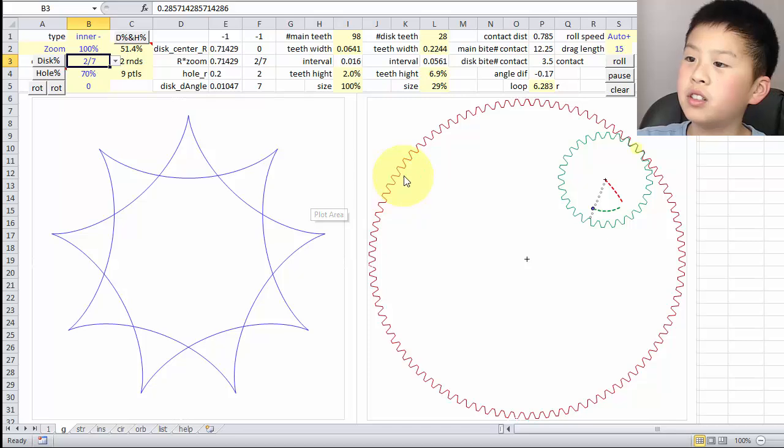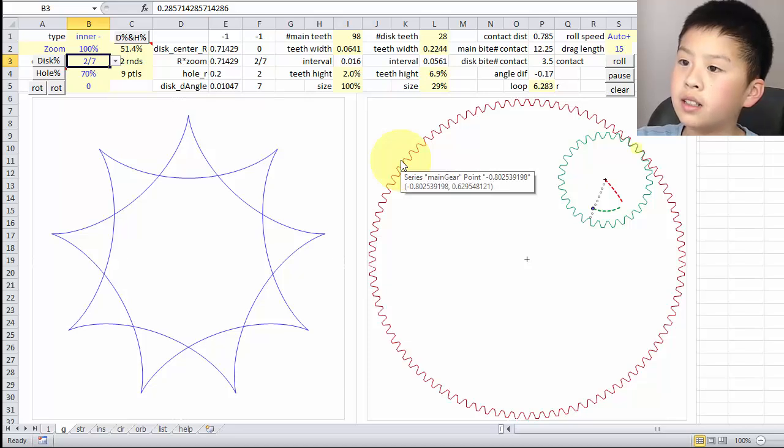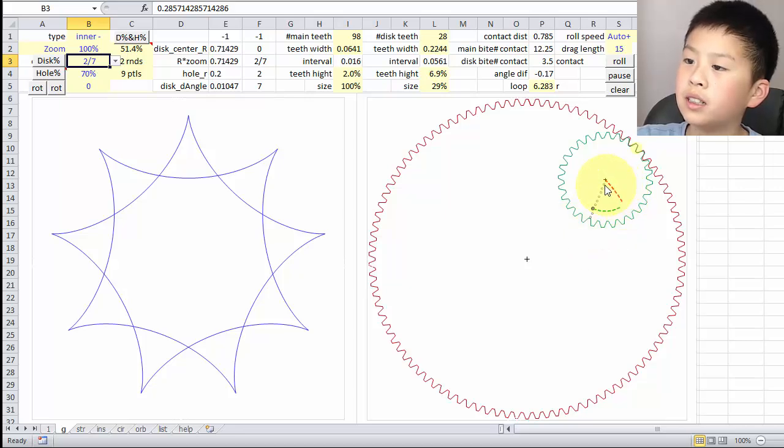Another thing I would like to point out is that the number of teeth here and on the green gear cannot just be any number. Here you can see the amount of teeth they have. The main gear has 98 teeth and the smaller disc has 28 teeth. And if you got the number of smaller gear teeth divided by the number of main gear teeth, you should get 2 over 7.